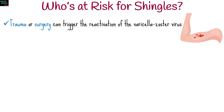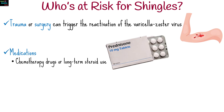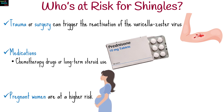Trauma or surgery in an area of the body can sometimes trigger the reactivation of the varicella zoster virus, leading to shingles. Some medications, such as chemotherapy drugs or long-term steroid use, can increase the risk of shingles by weakening the immune system. Pregnant women may also have a higher risk due to changes in their immune system.